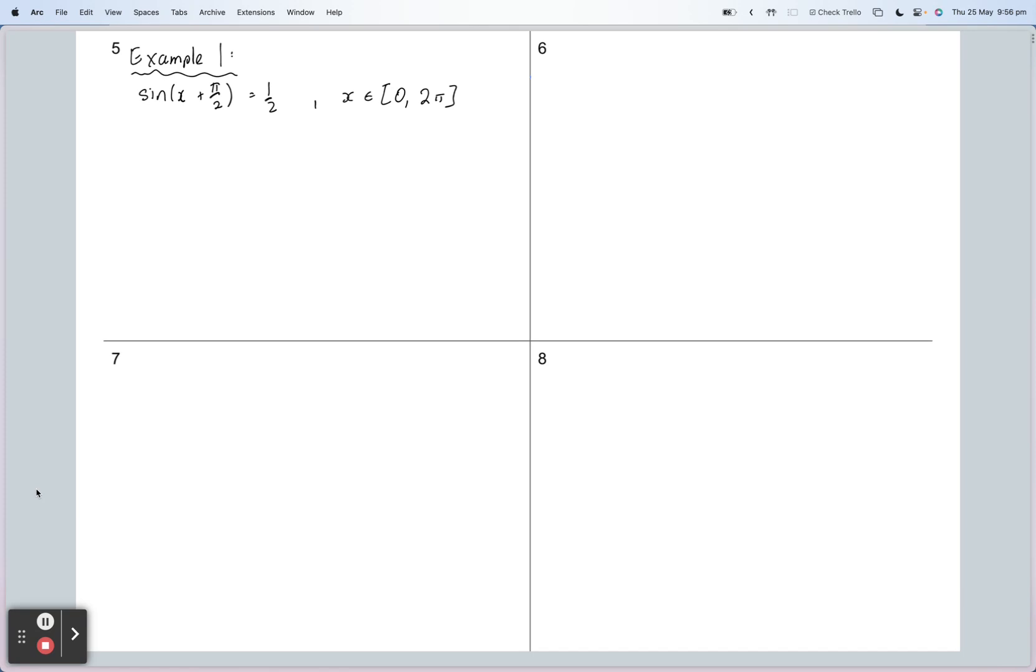Alright, so three nice examples. The first one here is sine of x plus π/2 equals a half, across the domain 0 to 2π. Solving means finding values for x for which this statement is true. We're going to start with our usual domain adjustment. Let theta equal x plus π/2. We always make a different variable. If it's x, I tend to use theta.